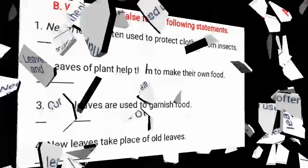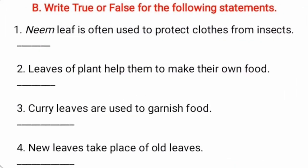Okay, write down the answer. Then question number B: write true or false for the following statements. One: neem leaf is often used to protect clothes from insects. Yes, we use neem leaves to protect clothes from insects. So it is true. Second: leaves of plants help them to make their own food. Yes, it is true.